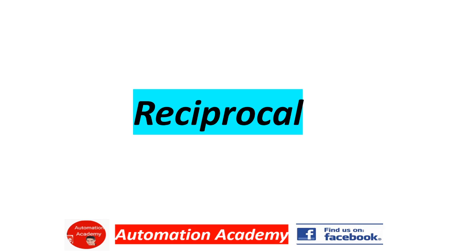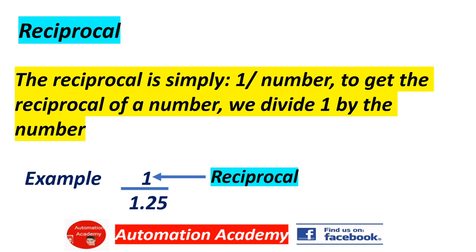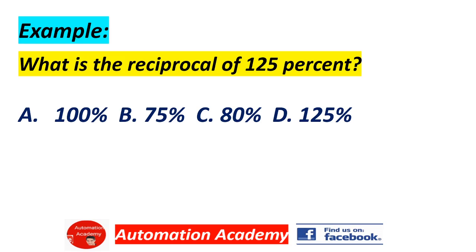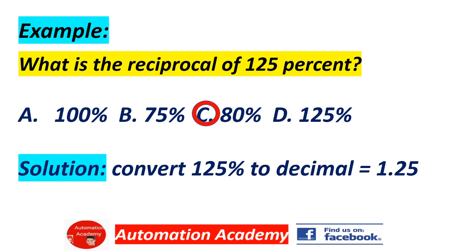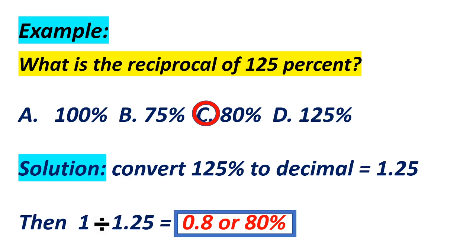Our next topic is Reciprocal. The reciprocal is simply 1 over a number. To get the reciprocal of a number, divide 1 by that number — for example, 1 divided by 1.25. Example question: what is the reciprocal of 125%? A) 100%, B) 75%, C) 80%, D) 125%. Answer: C, 80%. Solution: convert 125% to decimal equals 1.25, then 1 divided by 1.25 equals 0.8 or 80%.